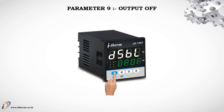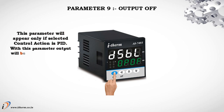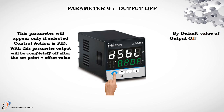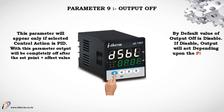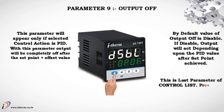Parameter 9: Output Off. This parameter will appear only if the selected control action is PID. With this parameter, the output will be completely off after the set point plus offset value. By default, Output Off is disabled. If disabled, the output will act depending upon the PID value after set point is achieved. This is the last parameter of the control list. Press the Set key to enter in run mode.